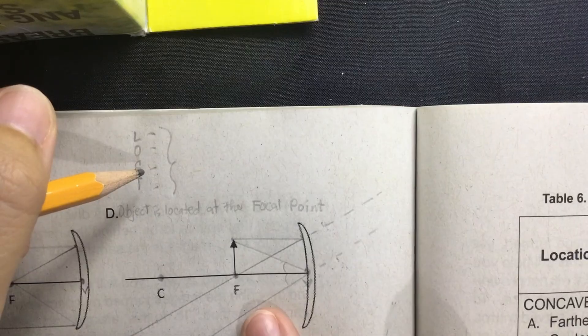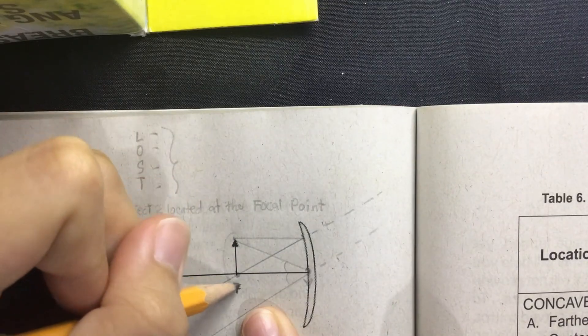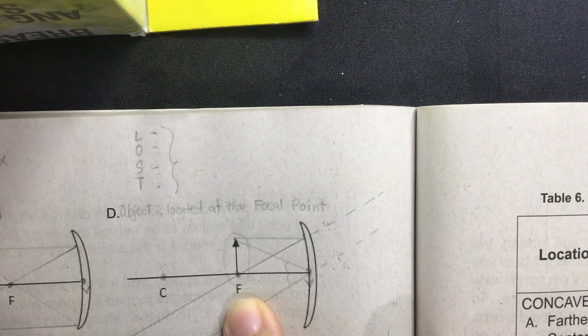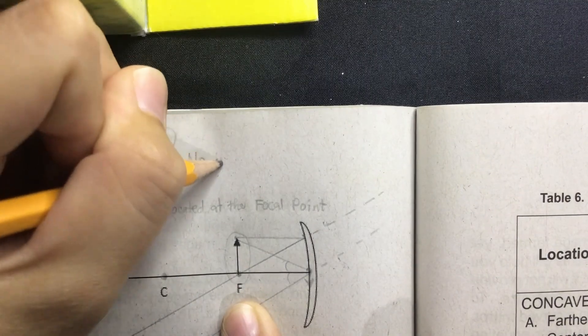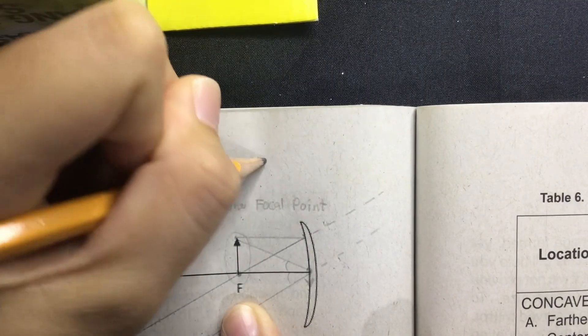Since there is no image formed when the object is standing at the focal point, it means no image is formed.